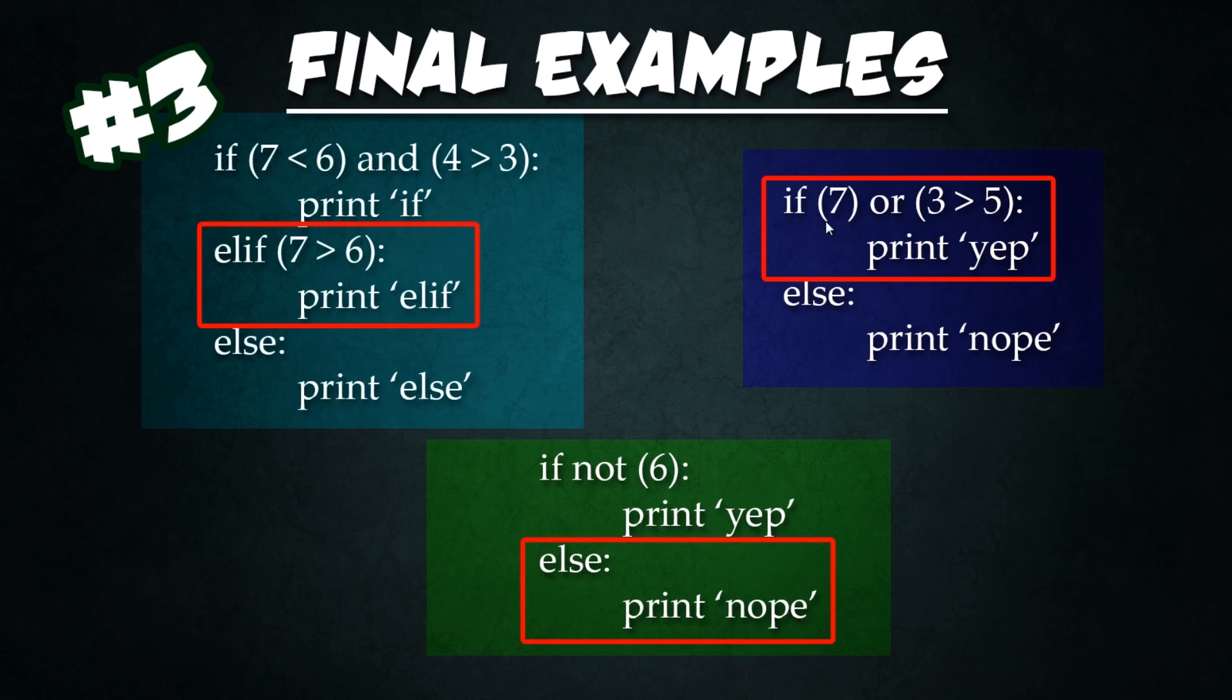On the right hand side, we have if seven or three is greater than five. So since the seven is actually a true statement in and of itself, the only false statement for a numeric value would be zero. Every other value is true. So seven is true, so if true, we're going to go ahead and print yep. And down below we said if not six. Any numeric value other than zero is going to be true. So it says if not true, so if false, it's going to go ahead and jump down to the else and print nope.